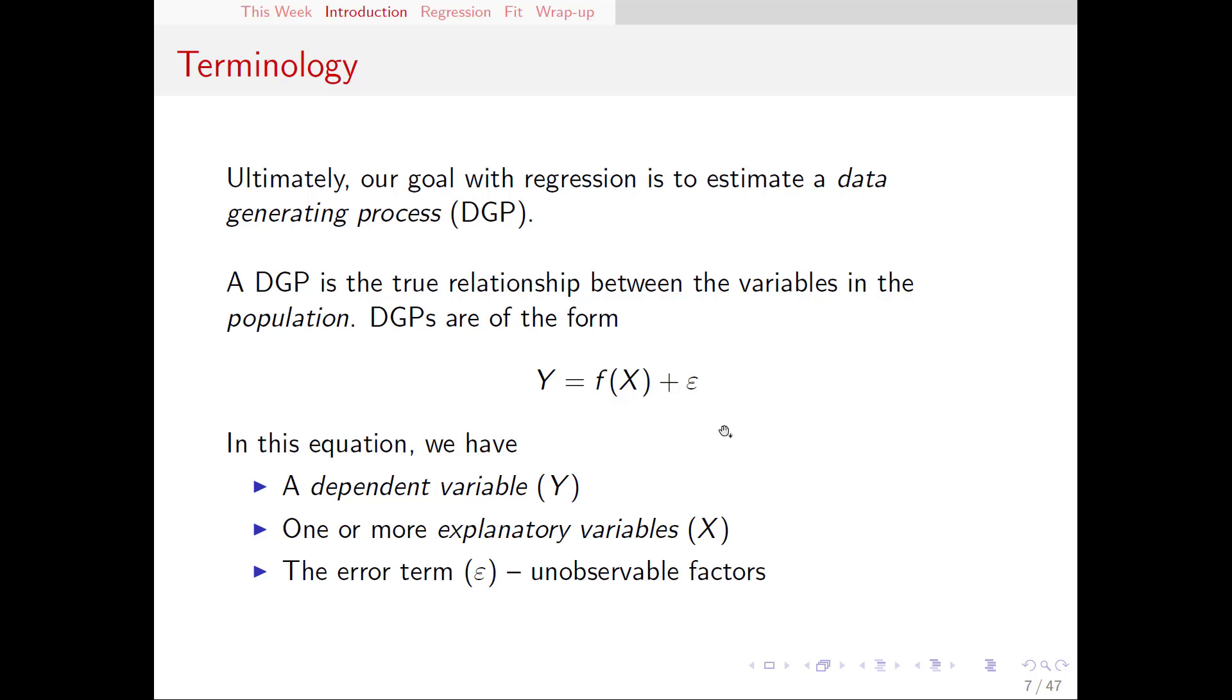Y is determined by f(x), the determining function based on the x's, plus epsilon. Epsilon is what we call the error term. While our x's, which we call the explanatory variables, are things that we can observe and measure, everything else that we can't observe and measure are in the error term. So y is determined by what we can see, x, but also many other things that we don't see. The error term is very important to a regression and we will come back to that concept later.